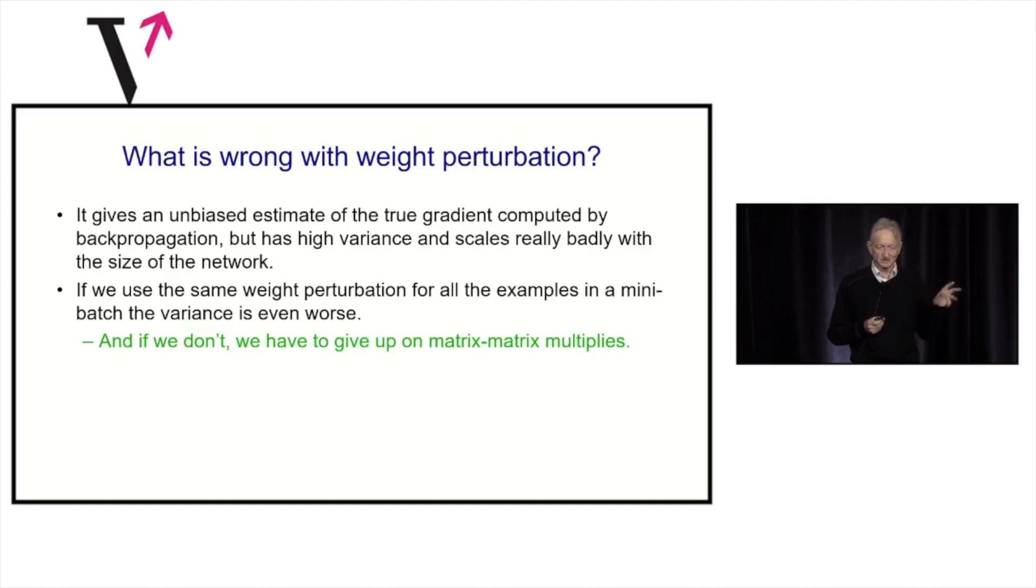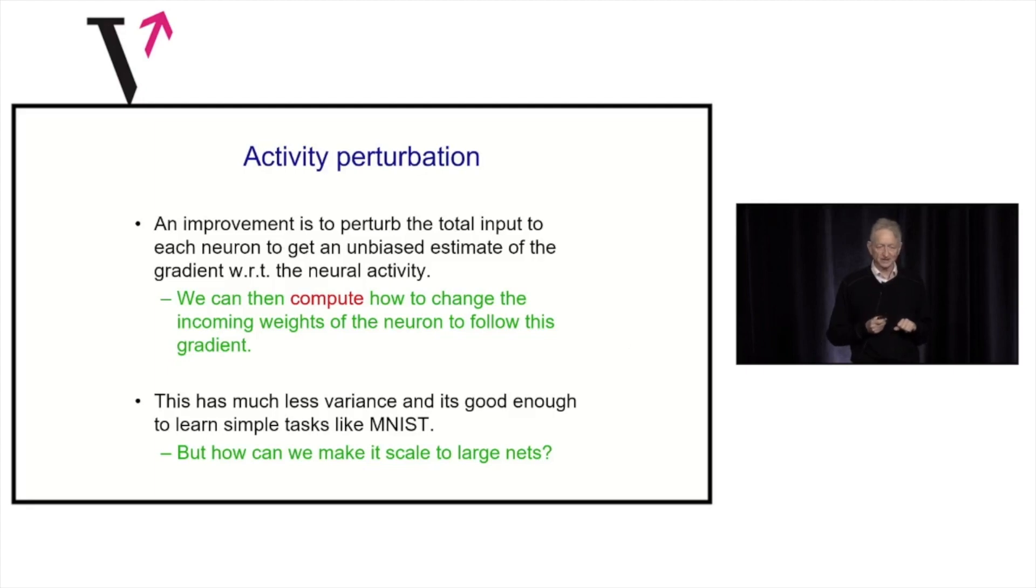Also, you can't use matrix multiplies with that. Matrix multiplies because you need to make different perturbations on every case. Otherwise, you get very high variance. Now, instead of doing that, people, about 30 years ago, figured out that you could perturb the activities. So you add a random vector of perturbations to the total input to a neuron, and you do the same thing. You say, how much did that random vector improve things, and let's multiply that random vector by how much it improved things, and add that to what we want to happen to the inputs. So then you've got an unbiased estimate of the derivatives with respect to the total inputs of the units, and then you can just go and compute how to change the weights to follow that gradient. That's a much better algorithm. It's got much lower variance. The things that you're adding noise to are the neurons, not the weights, so there's thousands of times less of them.